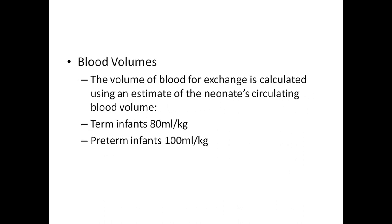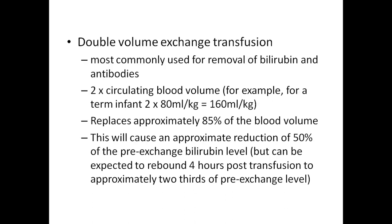The volume of blood for exchange transfusion is calculated using an estimate of the neonate's circulating blood volume: 80 ml per kg for term infants and approximately 100 ml per kg for preterm infants. Double volume exchange transfusion is most commonly used for the removal of bilirubin and antibodies. For example, for a term infant weighing 2 kg: 2 x 80 = 160 ml per kg. This replaces approximately 85% of the blood volume and causes an approximate 50% reduction of pre-exchange bilirubin, which may rebound 4 hours post-transfusion to approximately two-thirds of the pre-exchange level.